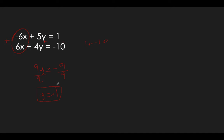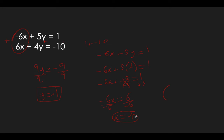Now we've got to plug it in to solve. I'm going to do equation 1 again. Equation 1 was negative 6x plus 5y equals 1. Where I see y, I'm going to plug in negative 1. So I've got negative 6x plus 5 times negative 1 equals 1. 5 times negative 1 is negative 5. We've got to get the x term by itself, so get rid of minus 5 — add 5. Negative 6x equals 6. Divide by negative 6: x equals negative 1. Write the final answer as an ordered pair — x goes first: (negative 1, negative 1).